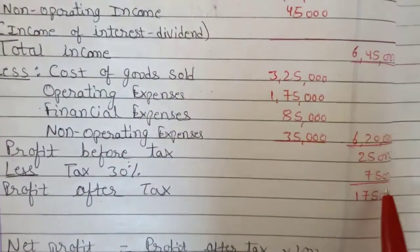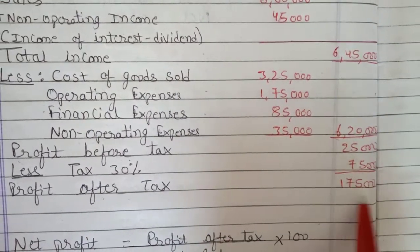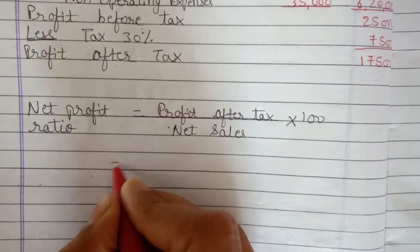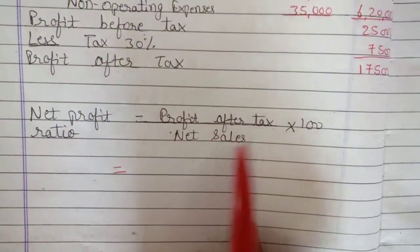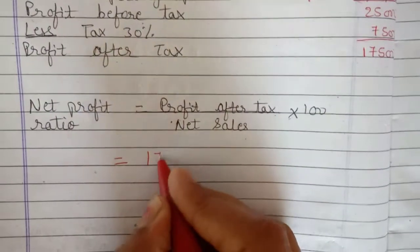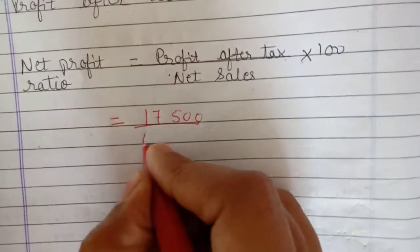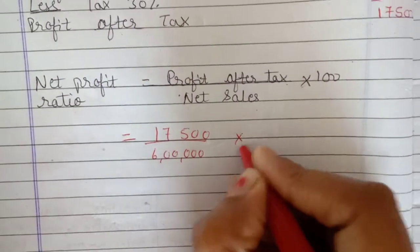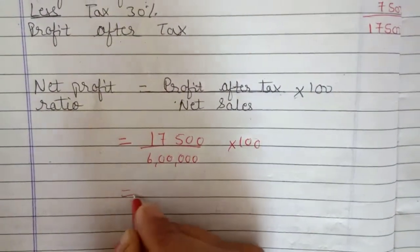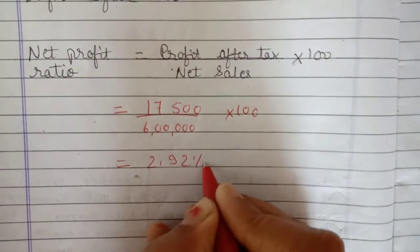From profit before tax, we deduct the tax. So Rs. 25,000 minus Rs. 7,500 gives profit after tax. Now, net profit ratio equals profit after tax upon net sales into 100. Profit after tax is Rs. 17,500, divided by net sales of Rs. 6,00,000, into 100. So net profit ratio is 2.92%.